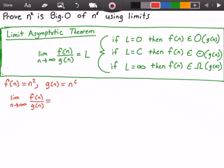Now this is equal to the limit as n approaches infinity of n squared divided by n to the power of 6, because f of n is n squared and g of n is n to the power of 6.